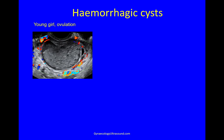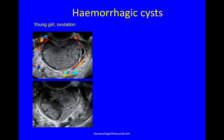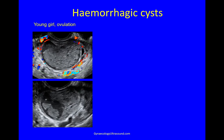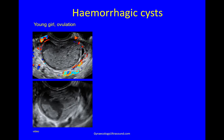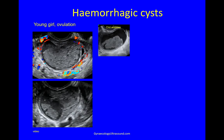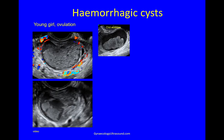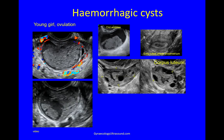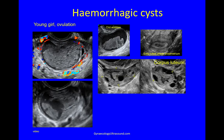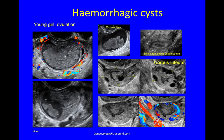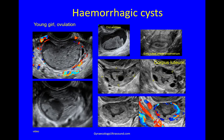This girl had just ovulated and came in with severe pelvic pain. With very gentle pressure you can see that the clot wobbles — a typical feature of hemorrhagic cysts when they have clot inside them. Look for early luteal phase endometrium and in other cases look for a corpus luteum as a collapsed crenelated mass with a strong ring of fire vascularity on colour Doppler.